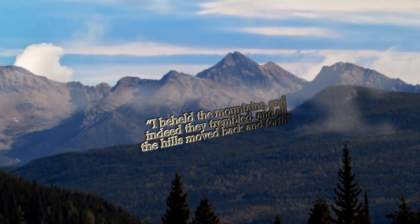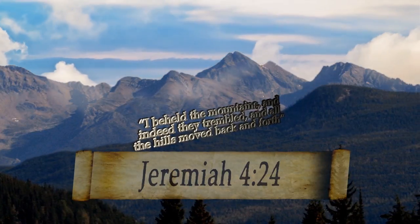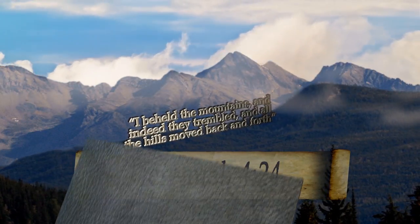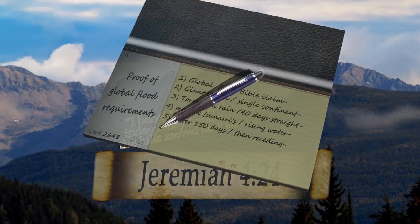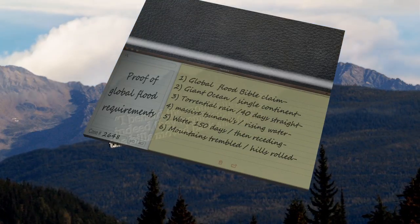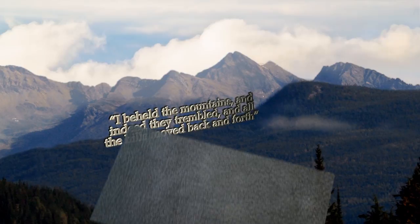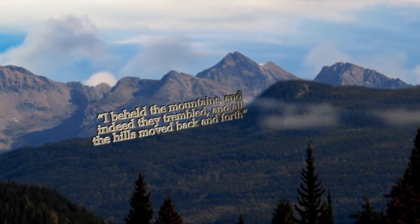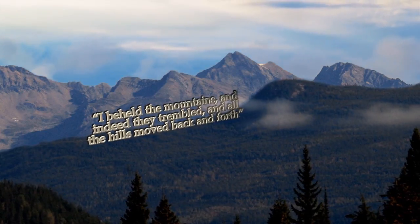Jeremiah 4:24 mentions that mountains trembled and hills moved back and forth. This is clearly a geologic event, but it would have to be a major geologic catastrophe that could in the process cause the waters of a once gigantic ocean to slosh or ride over dry land. For the time described, this investigation would need to find evidence for this trembling around the planet simultaneously.